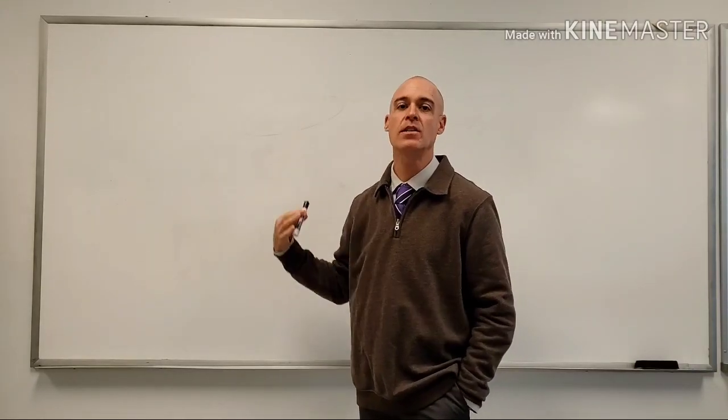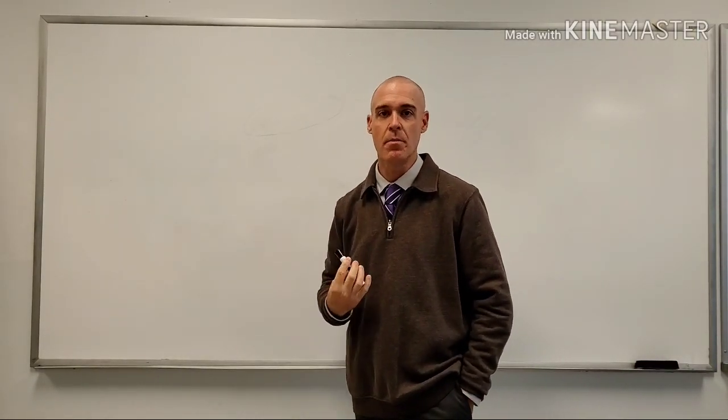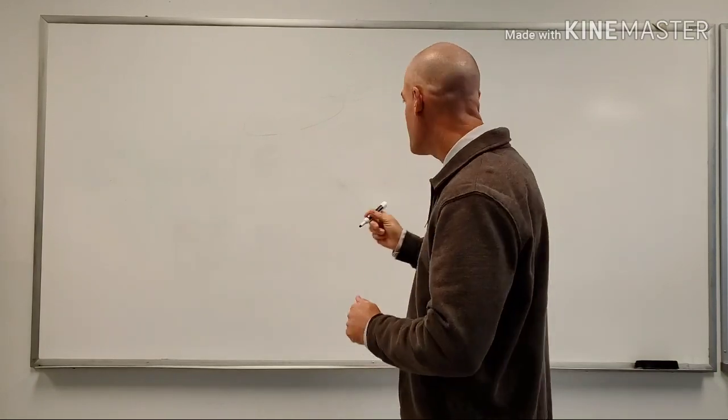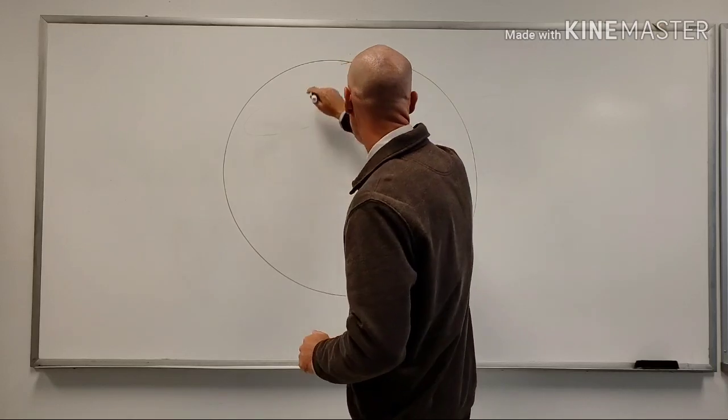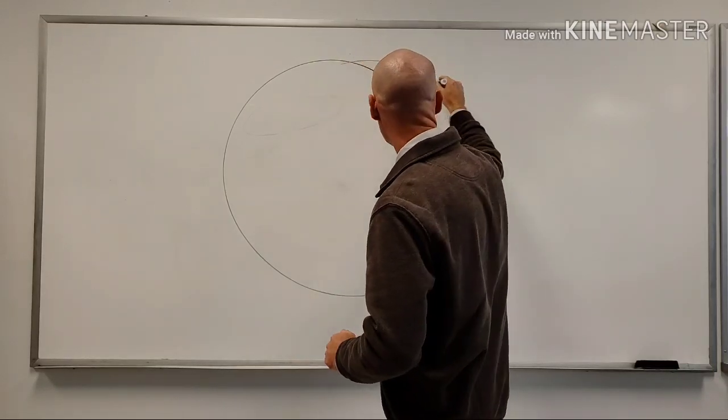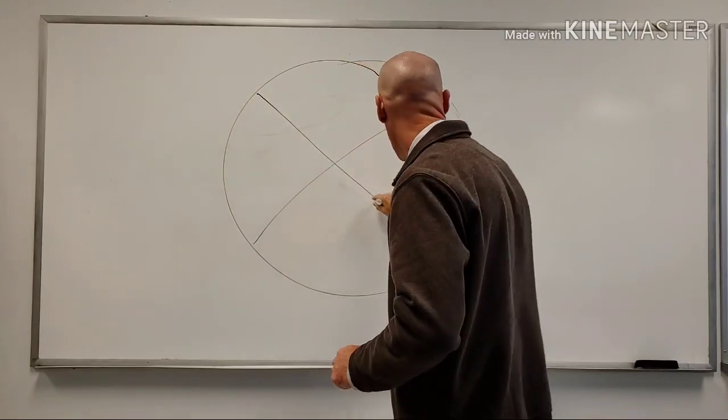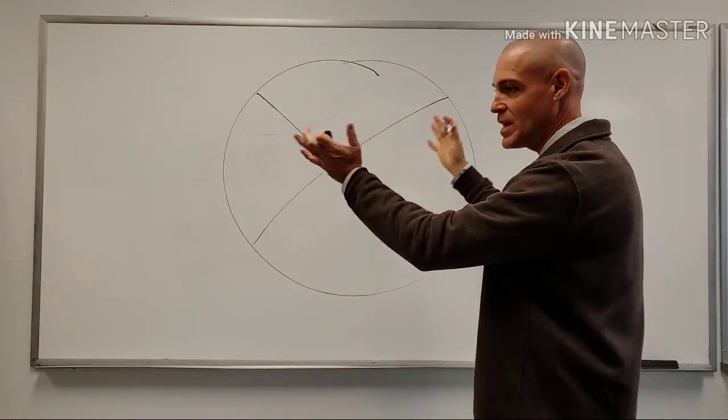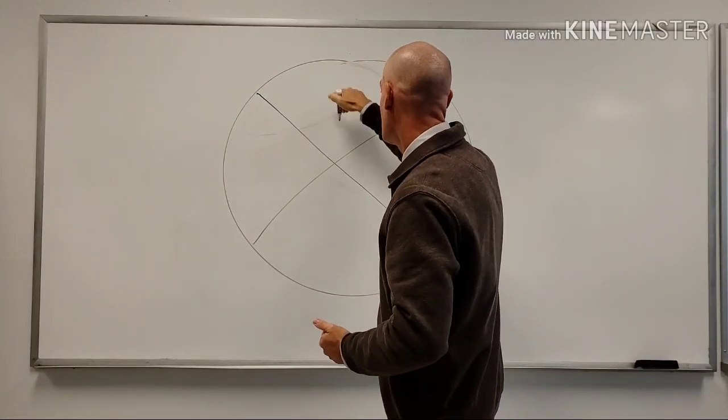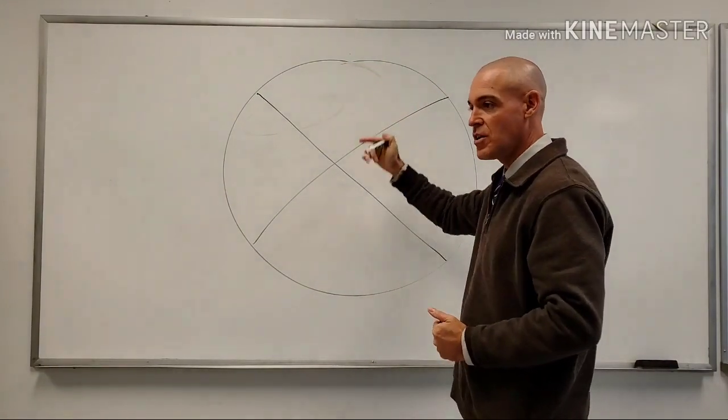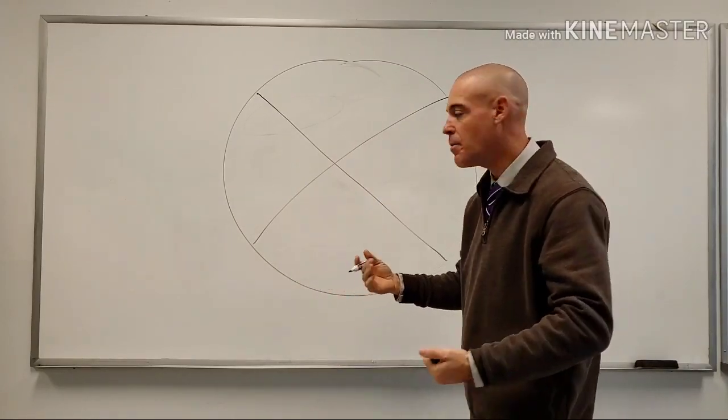We're going to talk about the four main stages of the cell cycle and about the final stage which is going to be mitosis. Let me draw it out here as best as I can. I'm just going to basically draw a big circle, split it into four parts, and we'll start with the four stages here of the life cycle of a typical cell in the body.